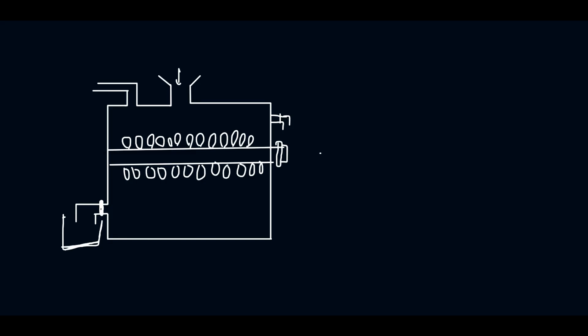In the previous session we discussed the reactions of the lime-soda process. In this session we will discuss what we have to do for softening techniques. The lime-soda process is divided into two subgroups: the first is the batch process and the other is the continuous process. Here is a diagram for the batch process.